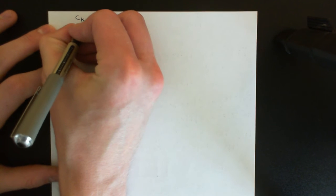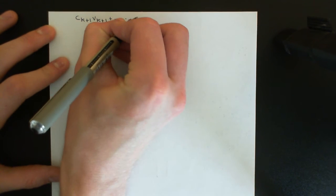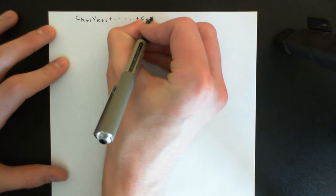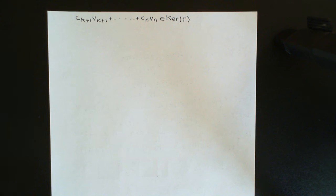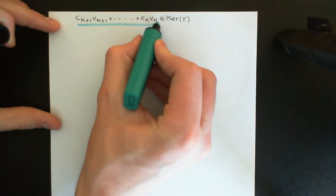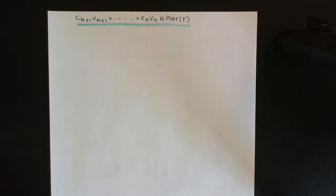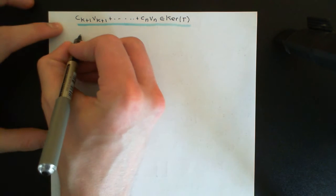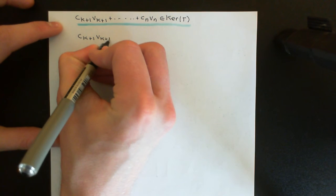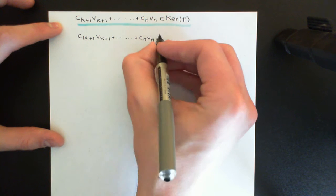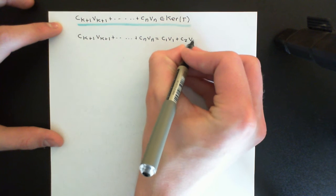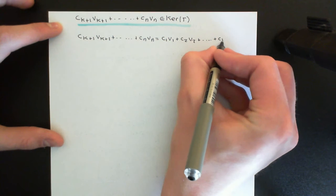Going over the page: we now know that Ck+1 times vk+1 plus all the way up to Cn times vn is an element of the kernel of the linear transformation. Any element in the kernel can be written as a linear combination of the basis vectors for the kernel, which are v1, v2, all the way up to vk. So we can write: Ck+1 times vk+1 plus all the way up to Cn times vn equals c1 v1 plus c2 v2 plus all the way up to ck vk.